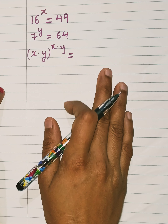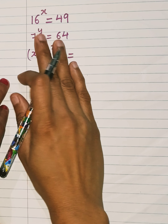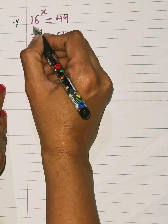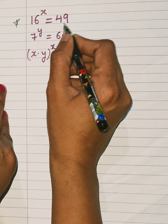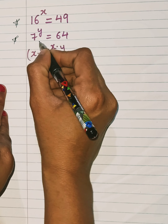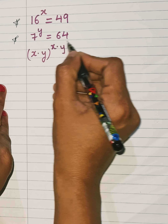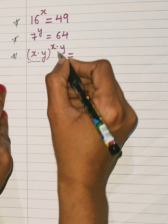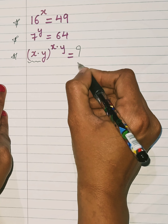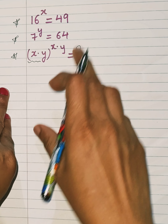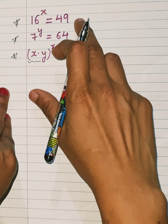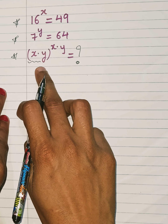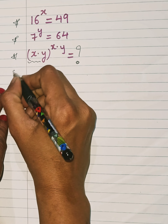Hello everyone, I am back with one more interesting question. Today's question is: 16 raised to x equals 49, and 7 raised to y equals 64. We need to find the value of x times y, raised to x times y, using these two equations.